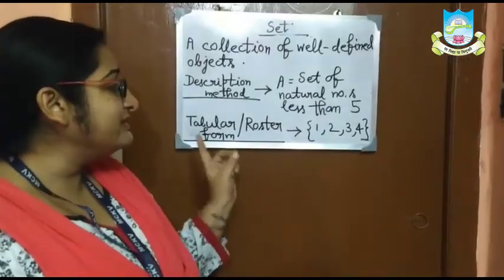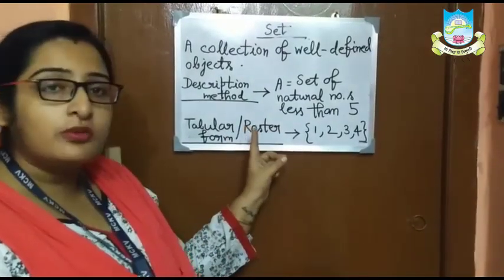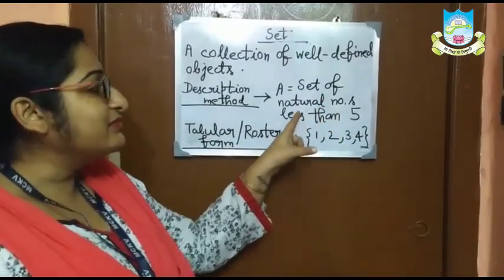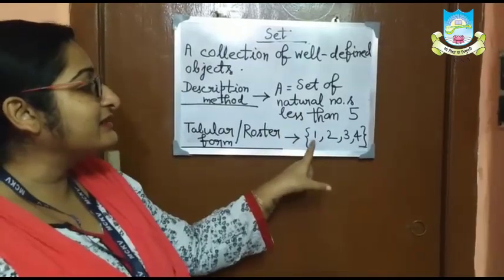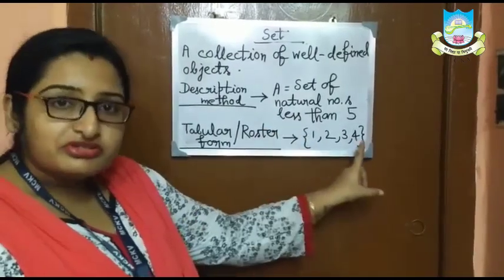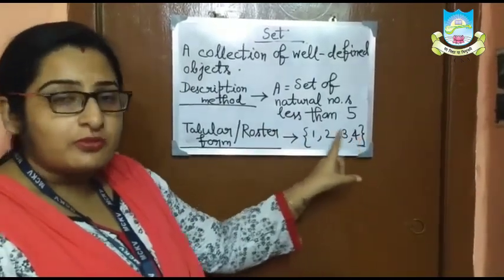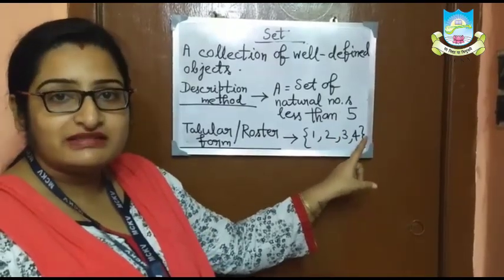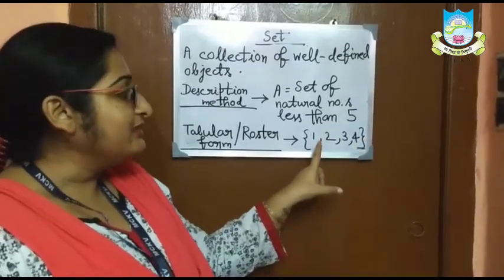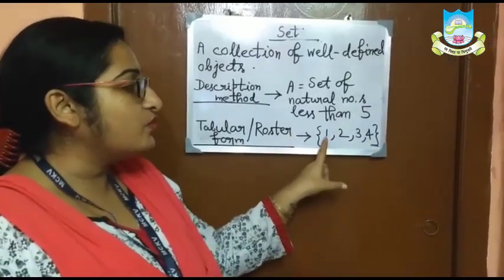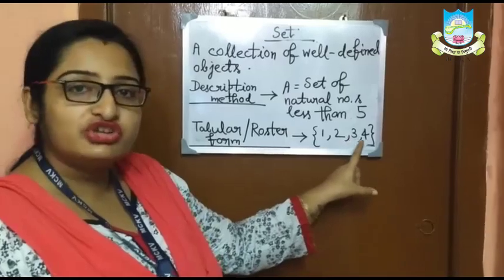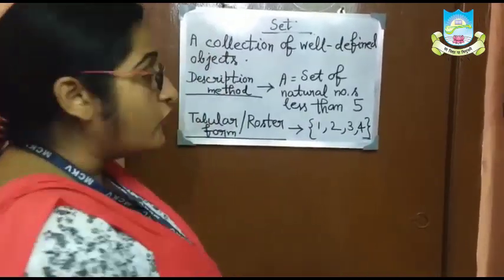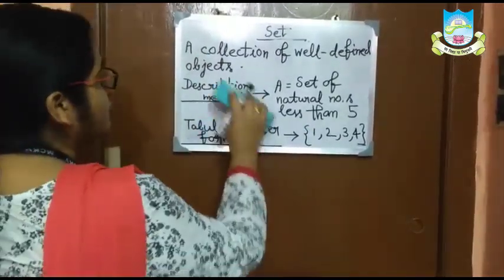The second one is tabular form or roaster form. In tabular form, we write only the elements of the set. For the same set, the elements are 1, 2, 3 and 4. So this is written in tabular form or roaster method.